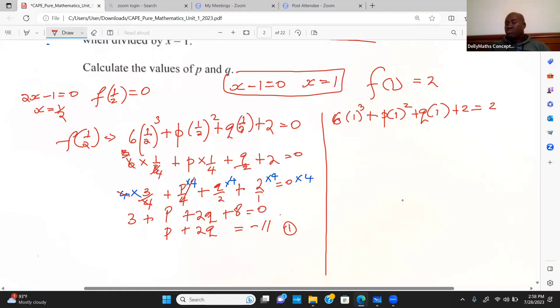1 to the 3rd is still 1, so we have 6 plus p plus q plus 2 is equal to 2. This is 8 here, 6 plus 2 is 8. Which means p plus q is going to equal, take the 8 from both sides, 2 minus 8, so this is negative 6. This is my second equation.